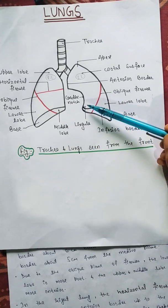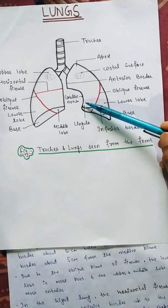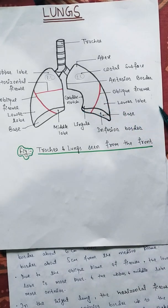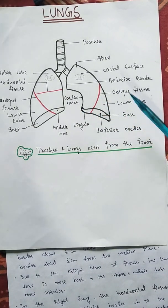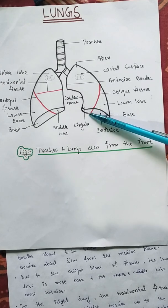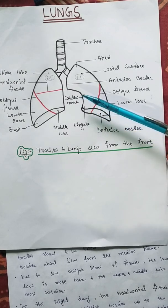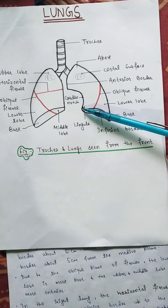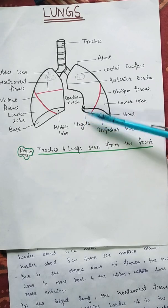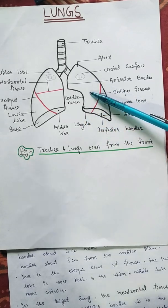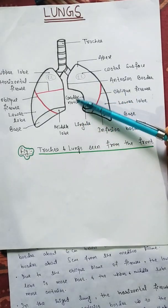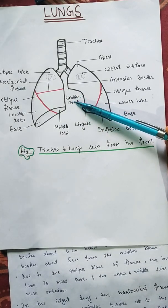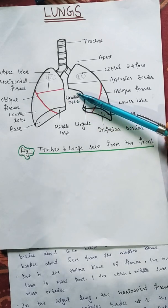There is one structure called the lingula — a tongue-like projection of the left lung just below the cardiac notch. The cardiac notch is for the heart; that is why it is called the cardiac notch. The lingula is present in the left lung only.